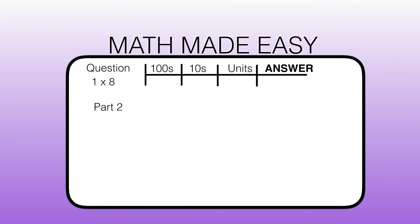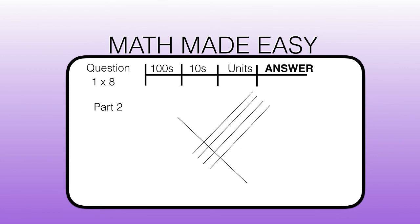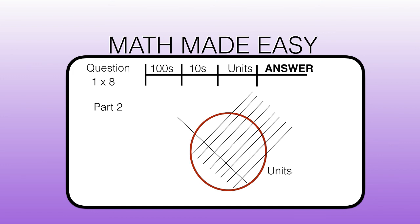Part 2 is the rounding up of 10 minus 9, which equals 1. So we multiply 1 times 8. We will bring in 1 thin line from the top left and then 8 thin lines from the top right. We will draw a circle around where the lines meet and count up how many times the lines meet: 1, 2, 3, 4, 5, 6, 7, 8 — and write 8 in the units box. 8 is the right answer.